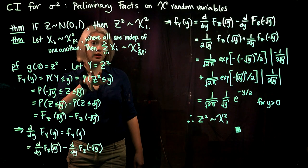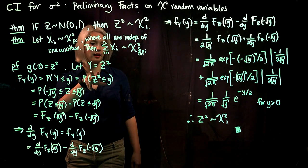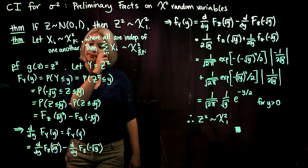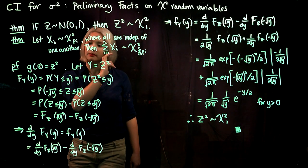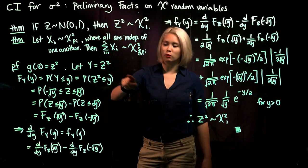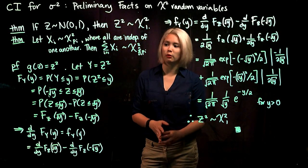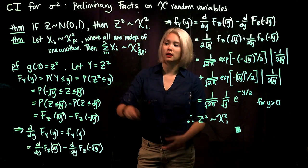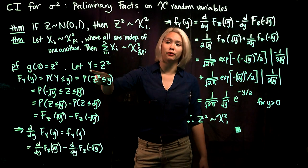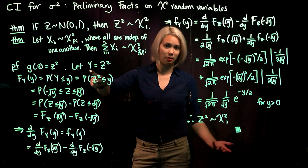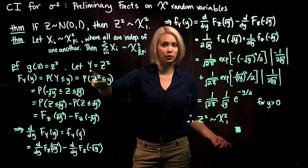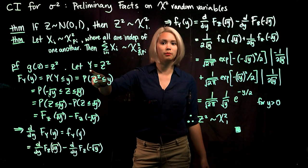We define a new random variable Y so that Y equals Z squared. Since Y equals Z squared, we want to show that the PDF of Y is just the PDF of a chi-squared random variable with one degree of freedom. Our usual technique is to first get the CDF, then take the derivative, and we'll end up with the PDF.